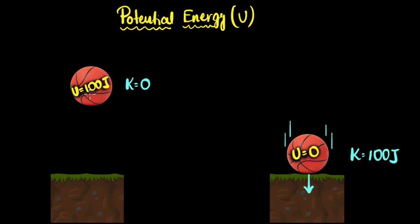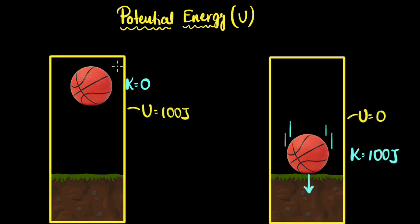Instead of saying the ball has 100 joules of potential energy, what we like to say is that this Earth–ball system together had 100 joules of potential energy to begin with. And then later on, as the ball fell down, that system's potential energy reduced and got converted into kinetic energy. You can immediately see a big difference between potential and kinetic: kinetic is an energy you associate with every object, but potential energy is not something you assign to a single object — it's a property of a system, a group of particles.